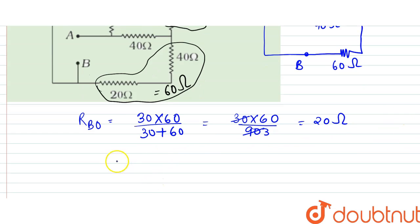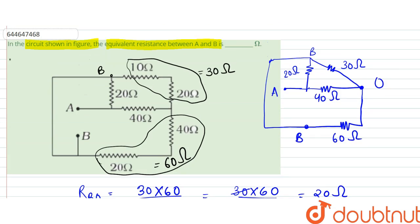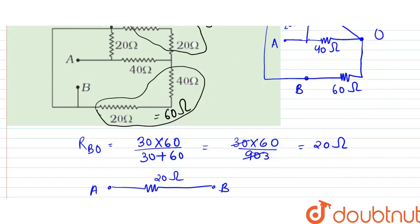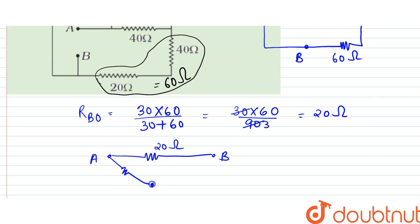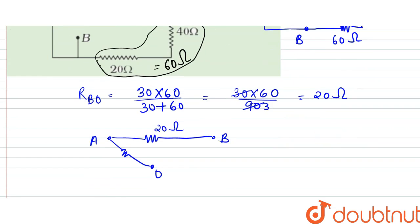So the circuit will become like this. This is A, this is B. The direct connection has 20 ohms here. And there was O in between. So from A to O we have 40 ohms. And the equivalent of B, O is 20 ohms now.